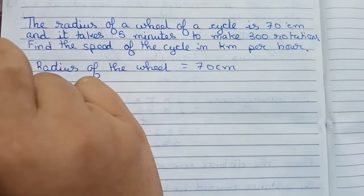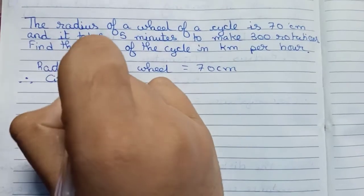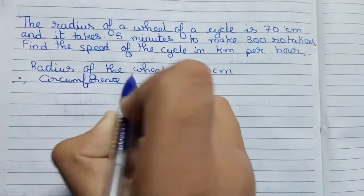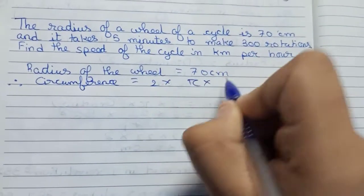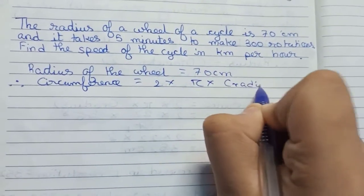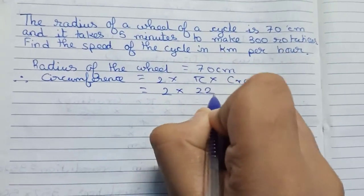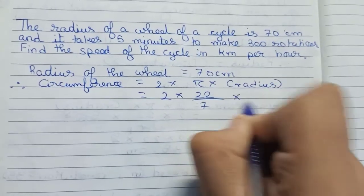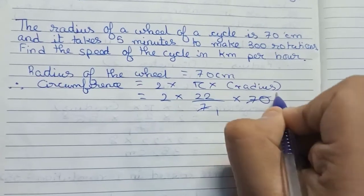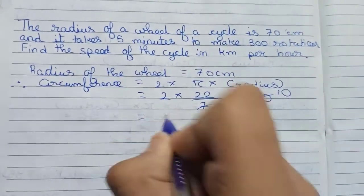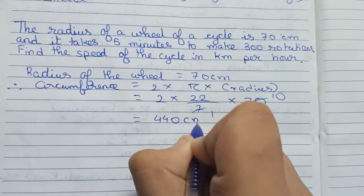Now I find the circumference of the wheel. Therefore, circumference equals to the formula 2 into pi into radius. So it will become 2 into 22 by 7 into 70. First we cut 7 and 70, it will become 10 by 1. So it becomes 2 into 22, 44 into 10, 440 centimeters. So this is our circumference.